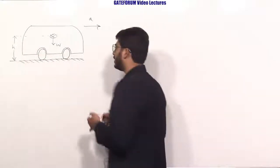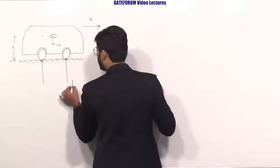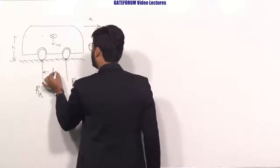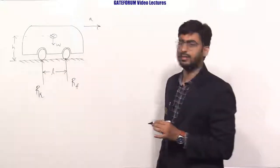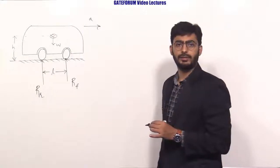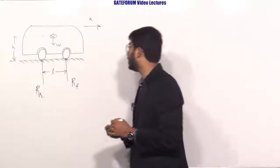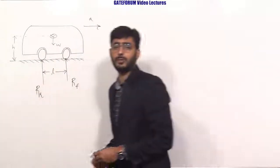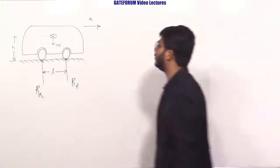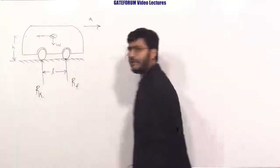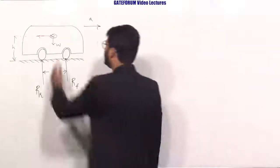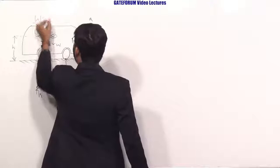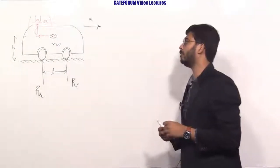The information about front and rear wheel reactions R_F and R_R is given. The distance between these two reactions is L. As per D'Alembert's principle, if the vehicle is moving forward, a pseudo force (inertia force) will act at the center of gravity but opposite to the direction of motion. Since the weight of the car is W, this pseudo force equals (W/G) × A.